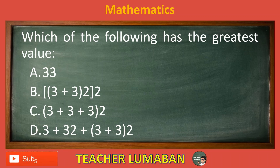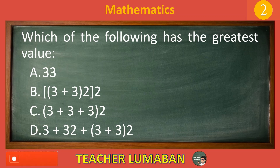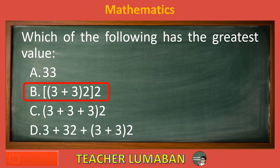Choose the suitable answer based on the given choices in 5 seconds. 5, 4, 3, 2, 1. The correct answer is letter B. Among the following, (3 plus 3) by 2 by 2 has the greatest value.